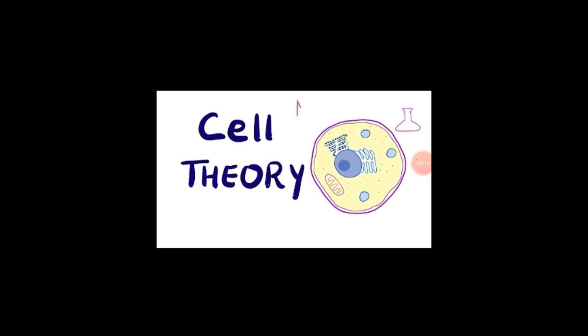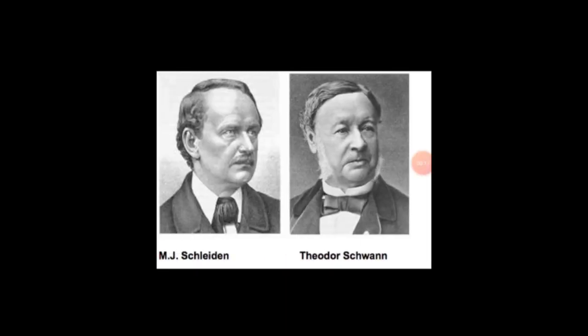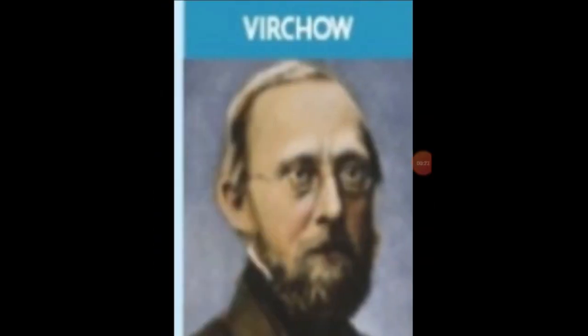It was proposed jointly by two scientists, Schleiden and Schwann. In 1855, Rudolf Virchow, a German physician, made an extension to cell theory stating that all living cells arise from pre-existing cells.